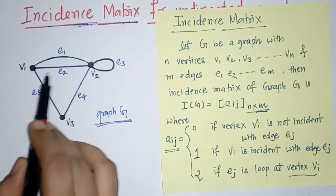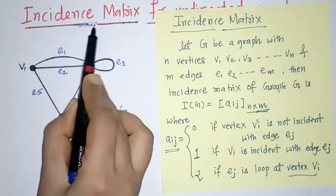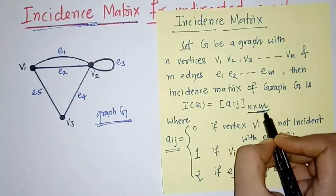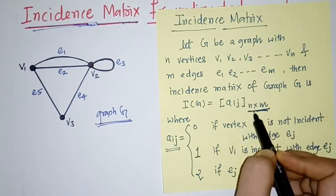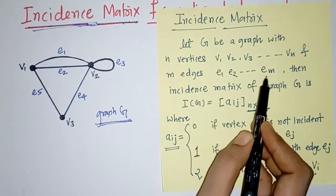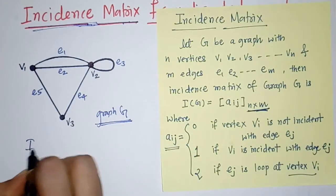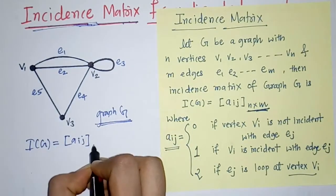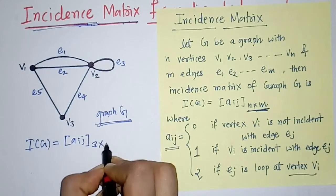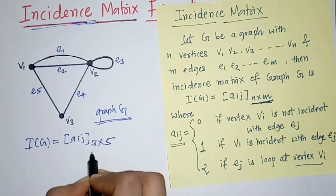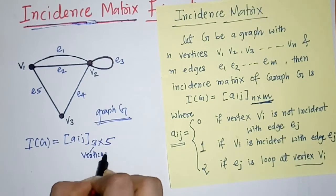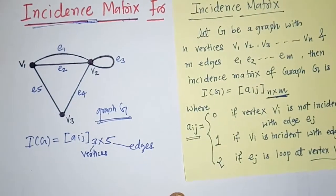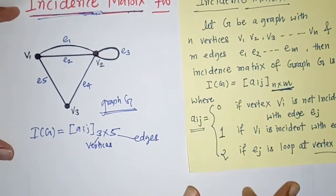So here we have to represent this graph as an incidence matrix. This incidence matrix is a matrix of order n by m — n is the number of vertices and m is the number of edges. That means this is a matrix of order three vertices by five edges. So we will now represent this as an incidence matrix.